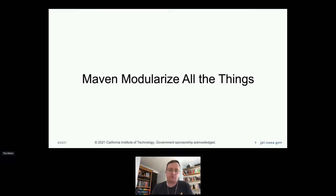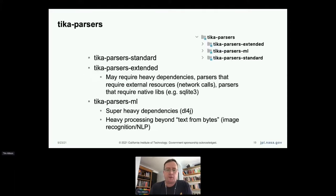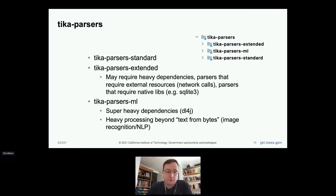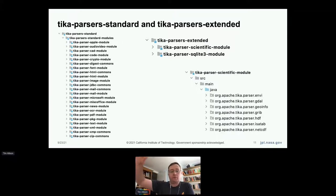The first major change is we have Maven-modularized everything. We haven't gone full Jigsaw, but we've started modularizing things in Maven. The goal is so that you don't have to pull in all the parsers if you don't need esoteric file formats. We have a Tika parser standard module with parsers most people would want. Then an extended one with heavier dependencies that may require external resources, network calls, or native libs. And a third level — Tika parsers ML — with super heavy dependencies like DL4J. Even within Tika parser standard, we've broken into submodules so if you're only parsing HTML, you don't need all the PDF parsing.